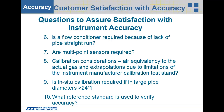Is a flow conditioner required due to lack of pipe straight run? If you have less than 10 to 15 pipe diameters, you'll want to look at a flow conditioner to condition the flow profile. Are multipoint sensors required? Sometimes you can use many flow elements going back to one transmitter, averaged for flow output. Calibration considerations include air equivalency to the actual gas and extrapolations due to test stand limitations — some labs can't cover your full flow range and must extrapolate the non-linear curve, which isn't ideal.